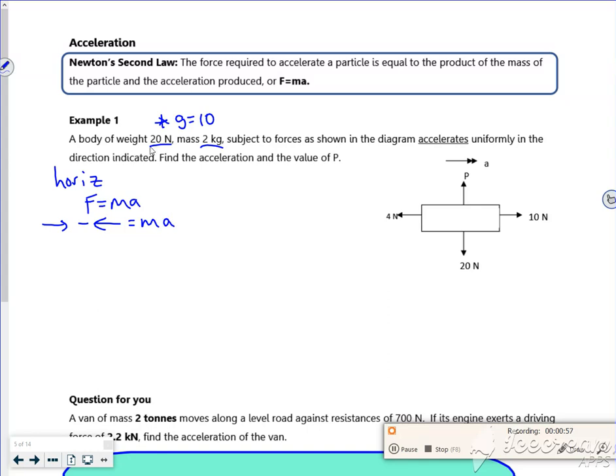So what have we got? The force in the direction of travel is 10. The force opposing it is 4. So I'm just looking at the ones which are in the direction of travel. That's equal to a mass of 2 kilos times by A. So it's not the 20 Newtons, it's 2 kilos.